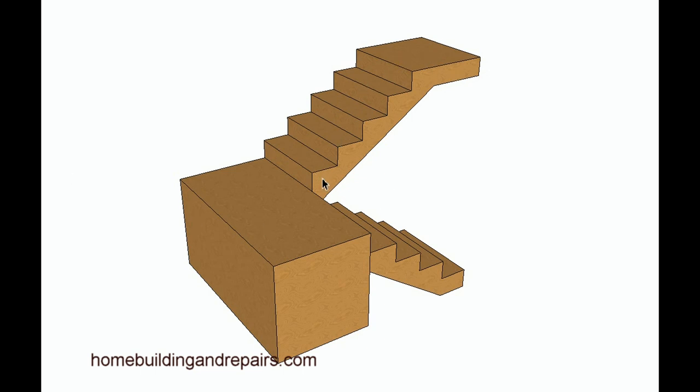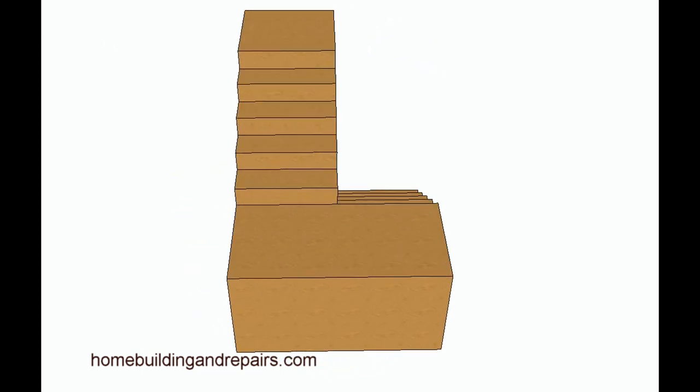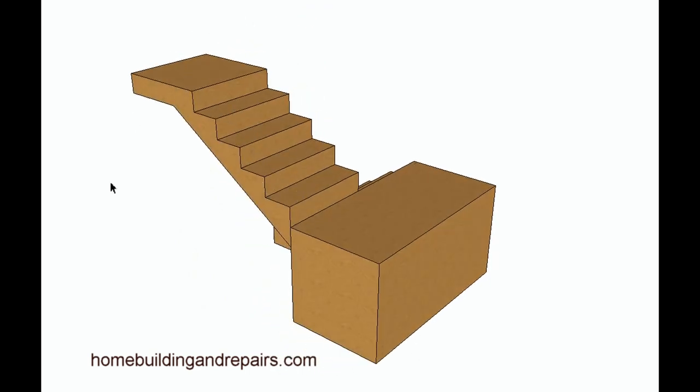What we're looking at here is a stairway that has four steps up to a landing. What would you need to do if you needed to remove one of the steps and have three steps down here or remove a step above?